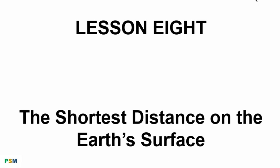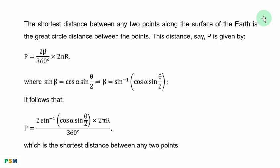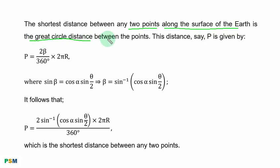Lesson 8: the shortest distance on the Earth's surface. The shortest distance between any two points along the surface of the Earth is the great circle distance between the points.